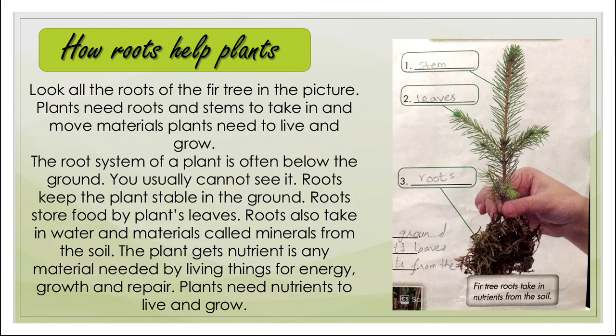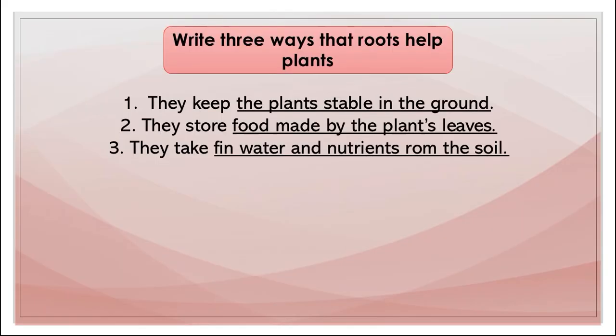There are three ways that roots help plants: First, they keep the plants stable in the ground. Second, they store food made by the plant's leaves. Third, they take in water and nutrients from the soil — if plants don't get enough food from the upper layer, they get it from the soil, absorbed water, and minerals already present in the soil.